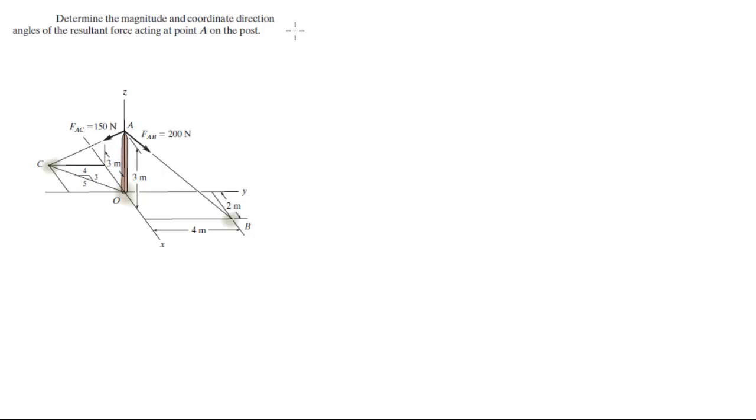First you find the position vectors for the different points. So for A, the point is 0i plus 0j plus 3k. For B, it's 2i plus 4j plus 0k. And for C, it's negative 4i minus 3j plus 0k.